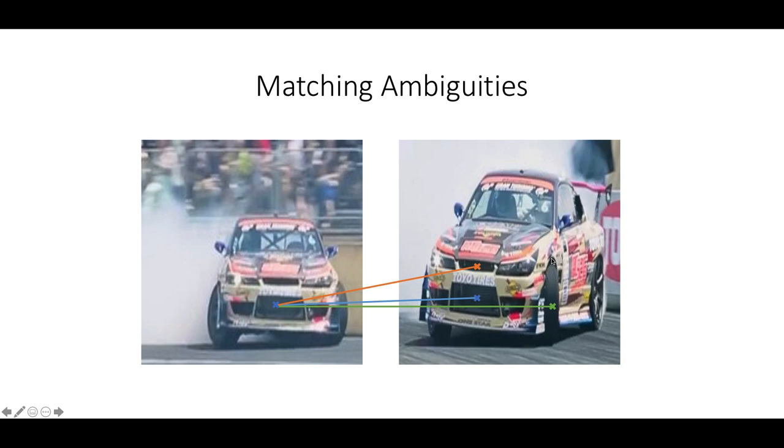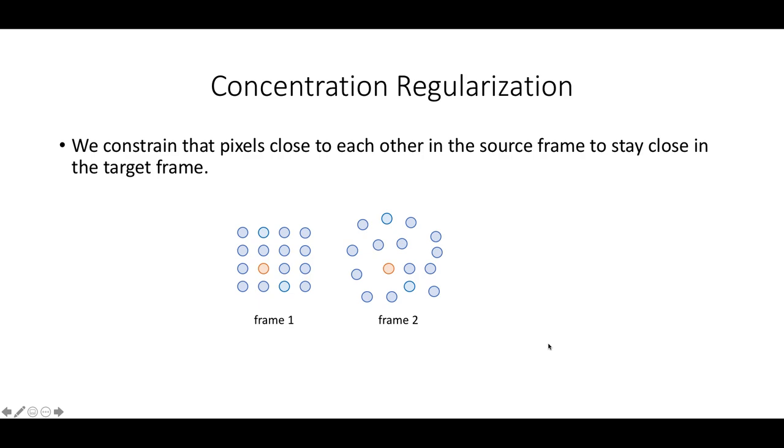On top of the progressive training framework I have introduced, there still exist matching ambiguities that possibly lead to wrong correspondence, since we use color appearance reconstruction as the only objective so far. This gives the model a lot of freedom. For example, one pixel with black color can be matched to any pixels with similar color. The objective itself does not regularize the local context for matching, which means we need to resort to more spatial regularizations to eliminate the mismatches.